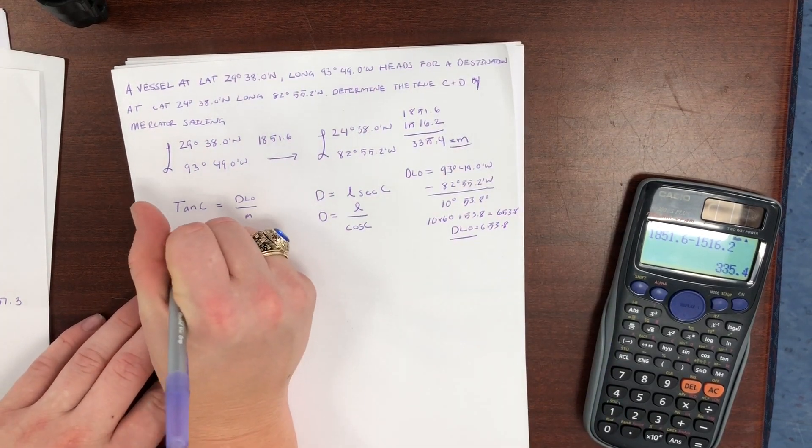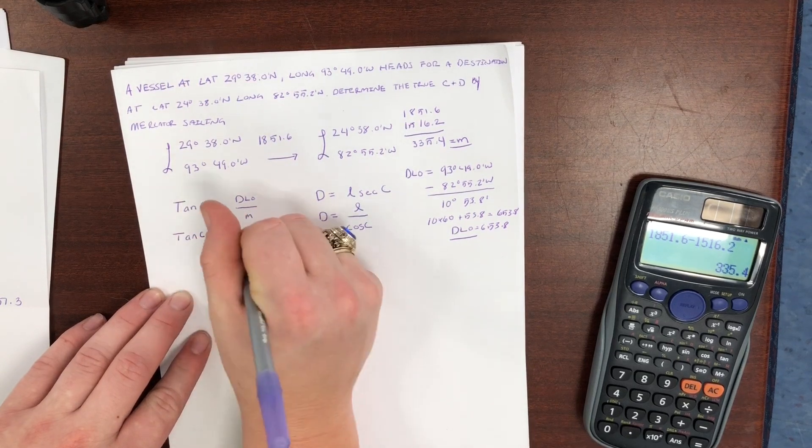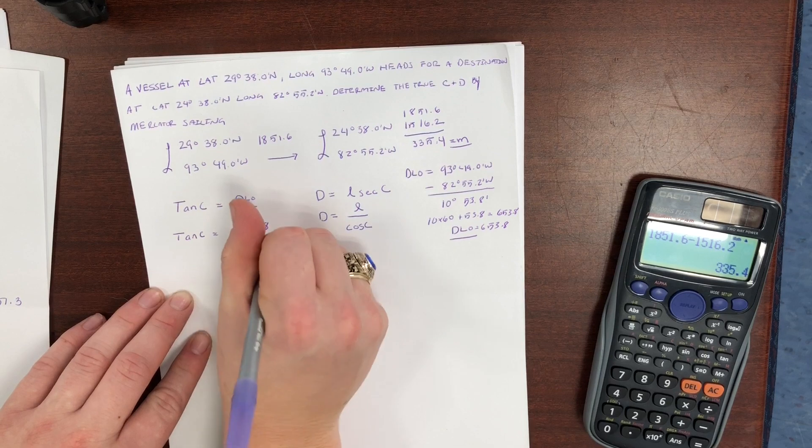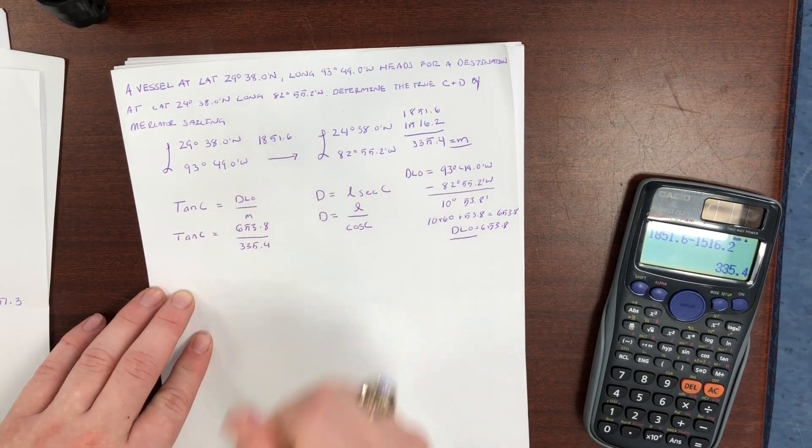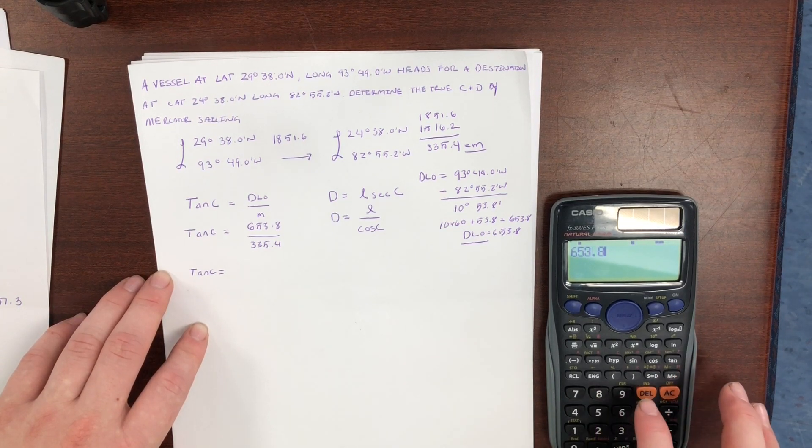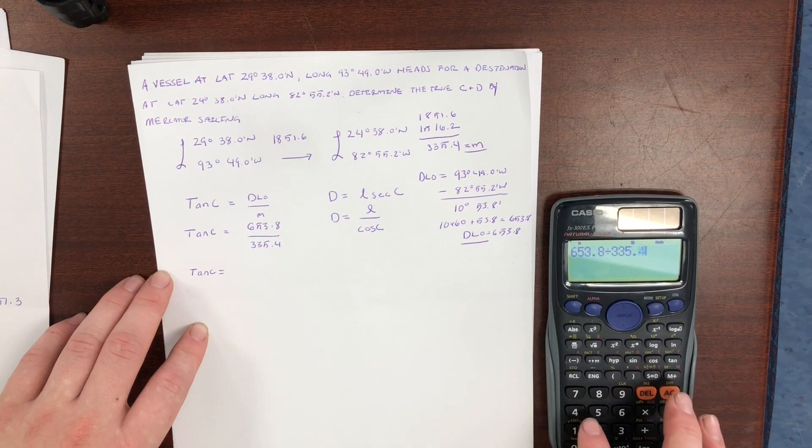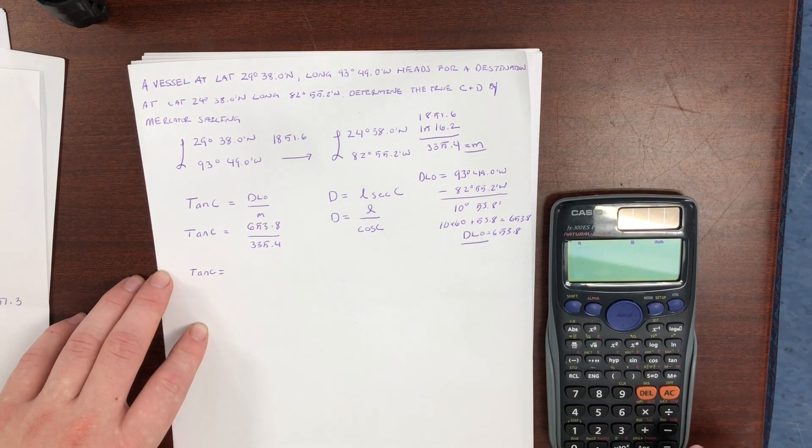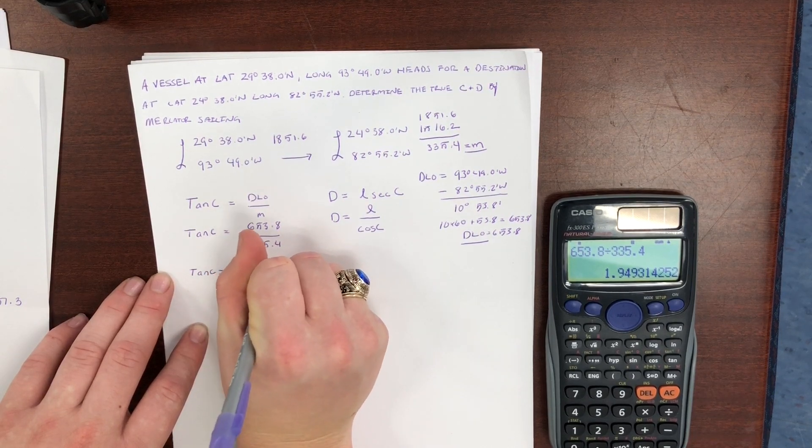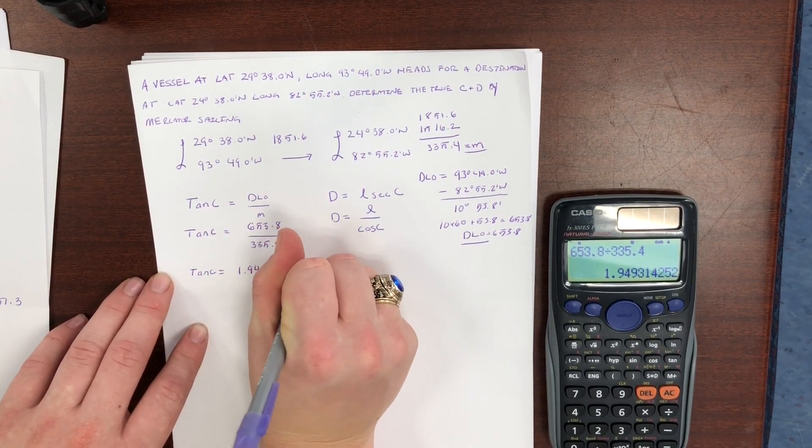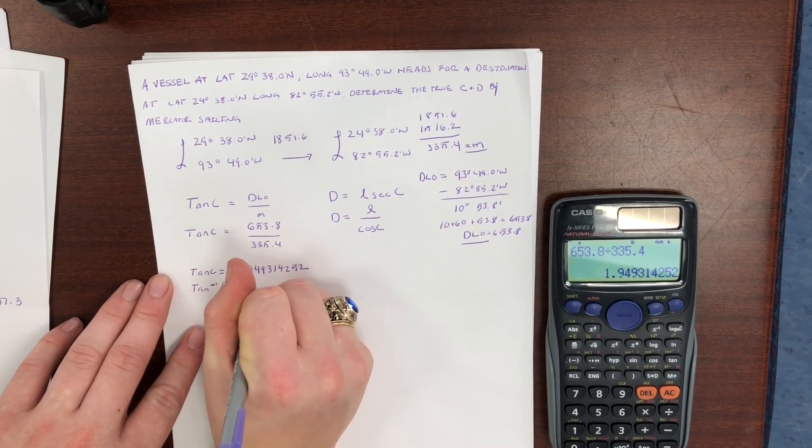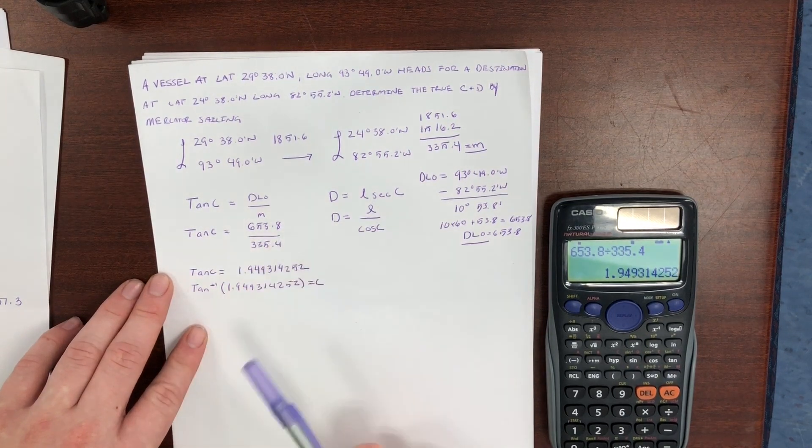Now that we have our DLO and our m, we can plug it into the formula tan C is equal to 653.8 divided by 335.4. So tan C is equal to 1.94934252.